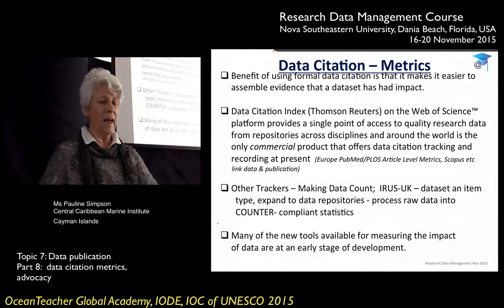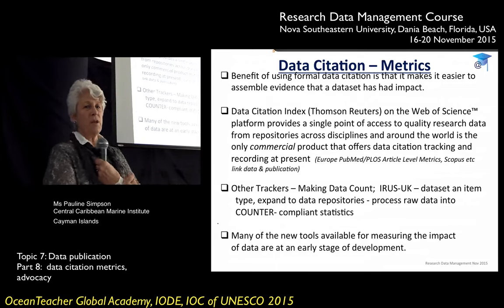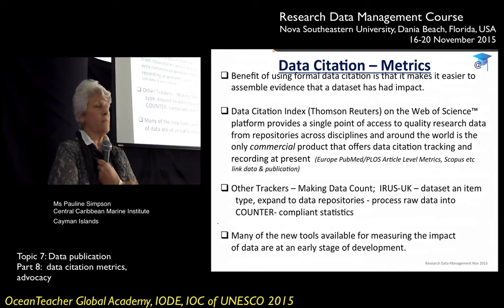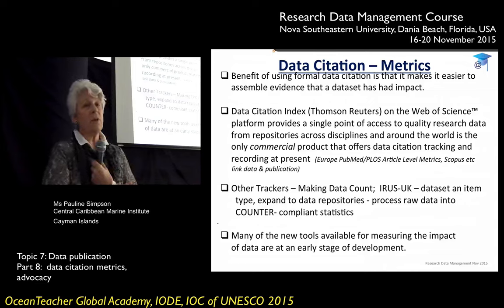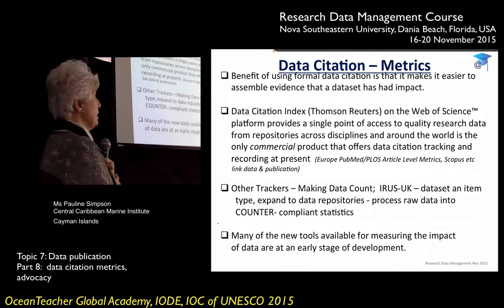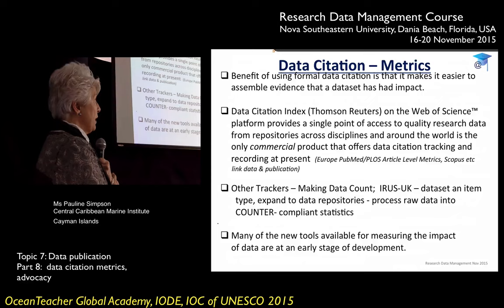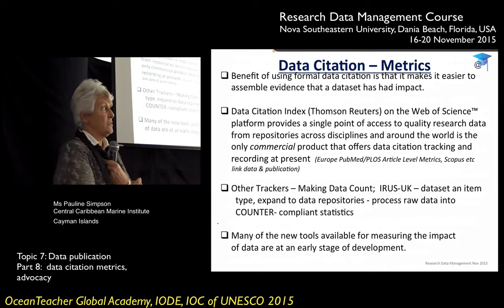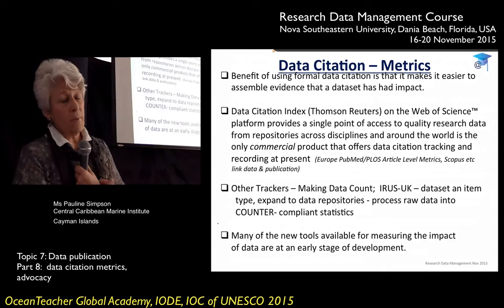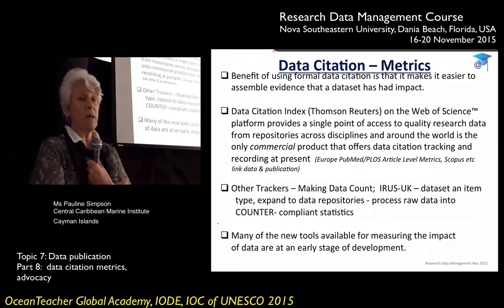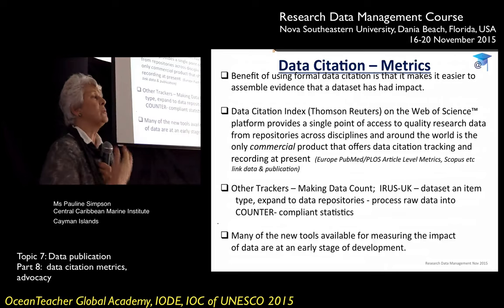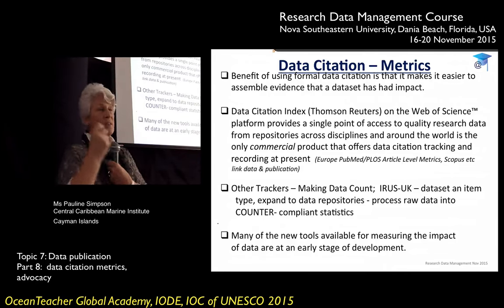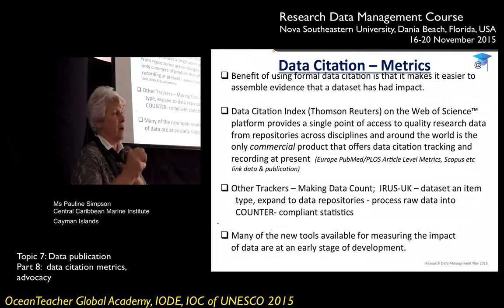You have to look very hard at the metrics being used. The Data Citation Index, published by Thomson Reuters on the Web of Science platform, is the only commercial product. The sad thing is it is commercial and requires a subscription — unless you have Web of Science access you won't be able to access those metrics. They're the only one offering data citation tracking and recording at present. Europe PubMed, article-level metrics, Scopus, and Google Scholar are all picking up statistics but they're not specific to the dataset — they combine it with the publication.